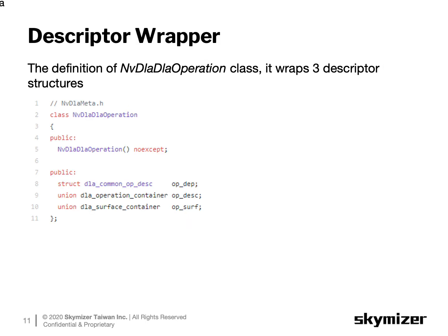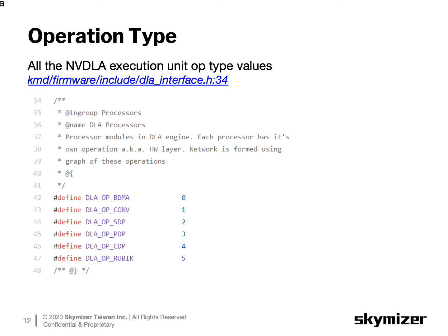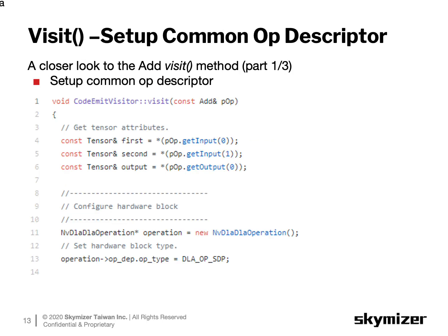Before taking a closer look at the visit method, let's check out the descriptor wrapper. In the NVIDIA backend, we defined a NVIDIA DOA operation class — a wrapper class used to encapsulate the three descriptor structures mentioned earlier. NVIDIA defines all possible OP type values in the doa_interface.h header file. To choose an execution unit to run, we assign the OP type field of the DOA common OP descriptor to one of the lowest values. There are six types in total. In the beginning of the visit method, we collect all information of the Add operator: first, we need the shape of the input and output tensors, and then set the OP type field of the common OP descriptor to DOA_OP_SDP, meaning we want to use the SDP hardware unit to implement the Add operator.